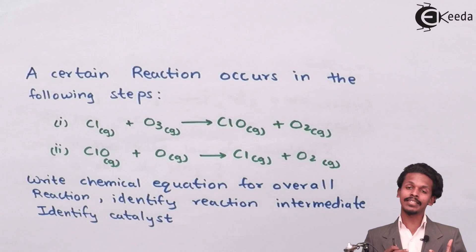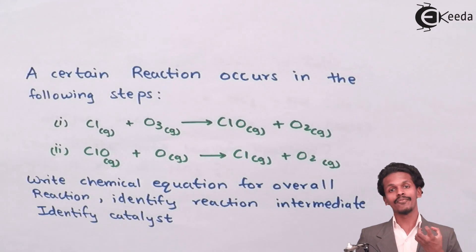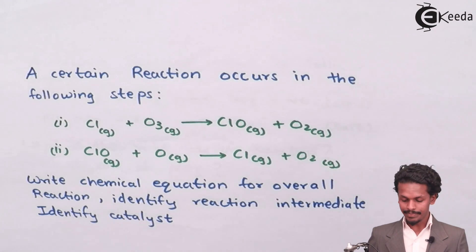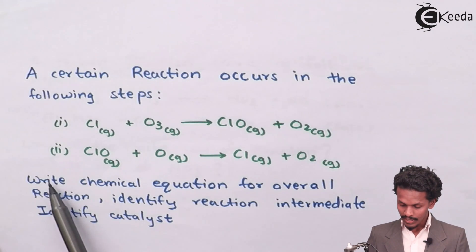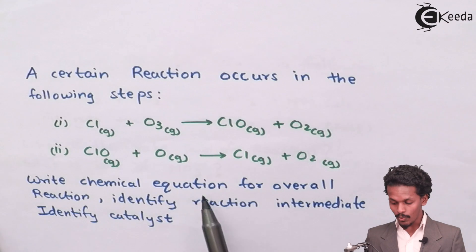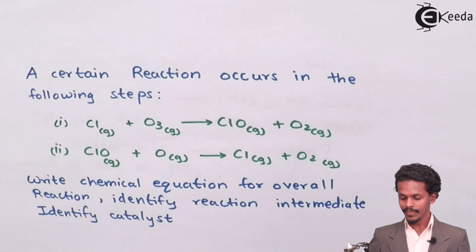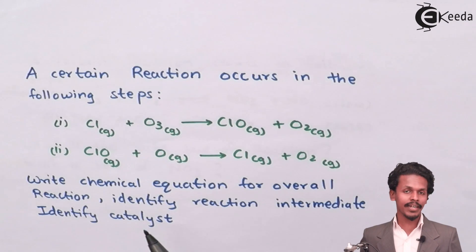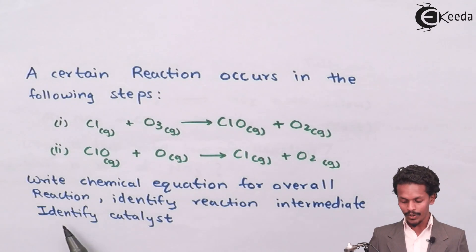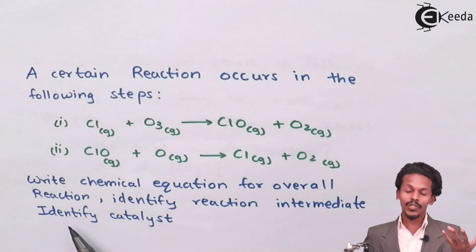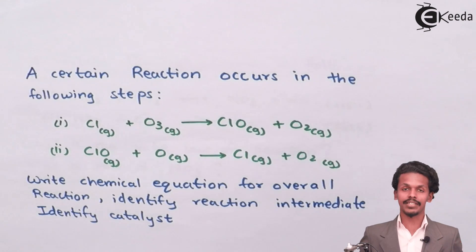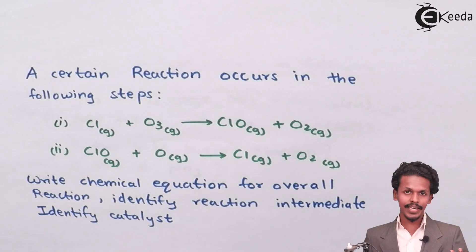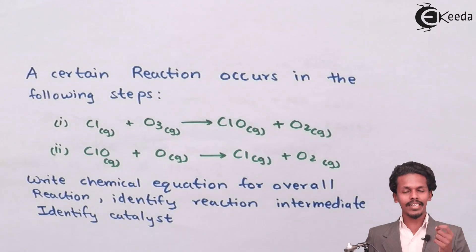Based on this, we have to fulfill three requirements: first, write the chemical equation for the overall reaction; second, find out the reaction intermediate; and third, identify which species is the catalyst in the given reaction. It is a straightforward problem, so let us solve it.